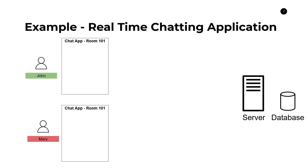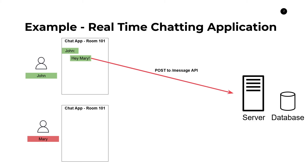Let's say both users have loaded up this application and John decides to send a message to Mary — he says, "Hey, Mary." In a typical REST-based model, John's chatroom application would send a POST request to a message API. This API would contain information such as the room in question (room 101), the user ID (John), and the message payload ("Hey, Mary"). The server would proceed to store that content into its database so that it could retrieve it later.